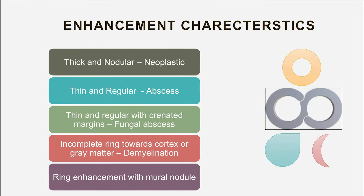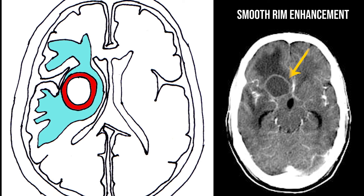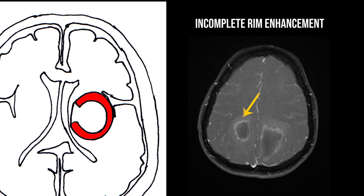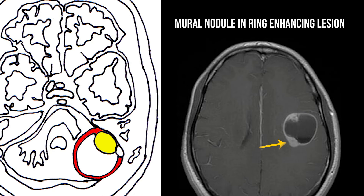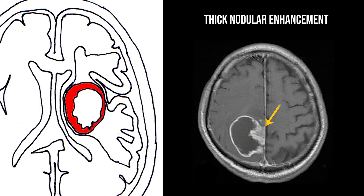Coming to enhancement characteristics, they can be thickened and nodular in case of neoplasms, thin and regular in case of abscess, thin and regular with crenated margins in cases of fungal abscess. They can be an incomplete rim towards the cortex or gray matter in demyelination. Ring enhancement with a mural nodule can also be seen in low grade neoplasms like pilocytic astrocytoma. Thick nodular enhancement is seen in glioblastoma multiforme.